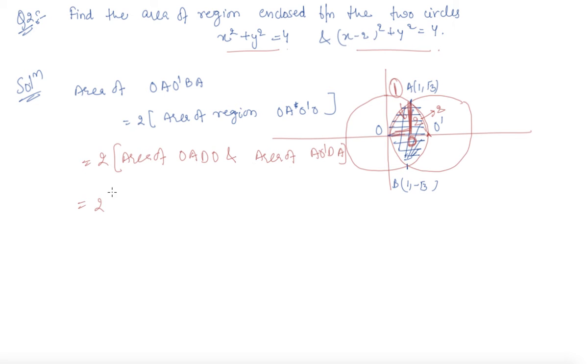So, this will be two times integral from 0 to 1, Y dx plus 1 to 2, Y dx. From 0 to 1 where Y is from this circle equation, this is square root of 4 minus X minus 2 whole square dx and 1 to 2 is square root of 4 minus X square dx.